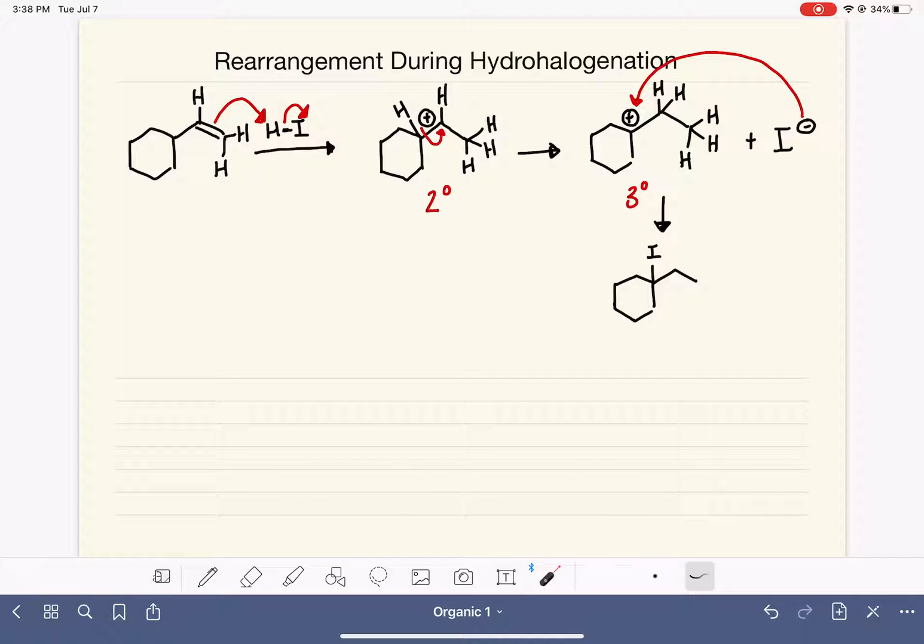The last thing that we always need to do is analyze, did we make a chiral carbon in this process? Is this carbon chiral? It is not due to the symmetry of the cyclic portion of the molecule. This is an achiral carbon, so we don't have to worry about R versus S.